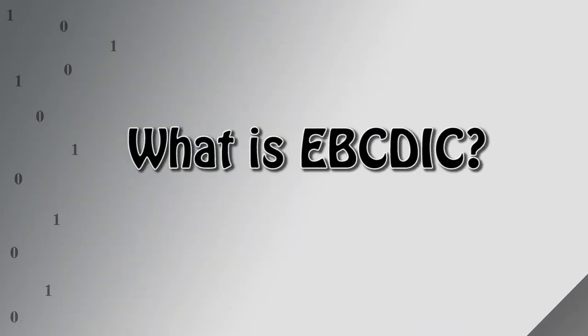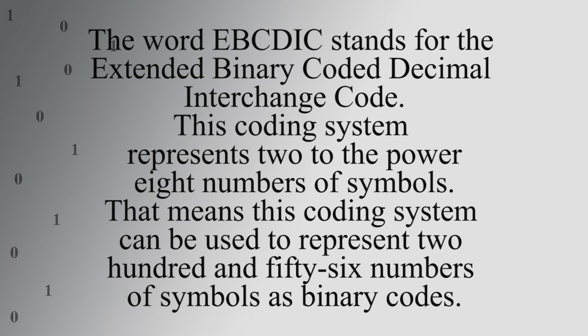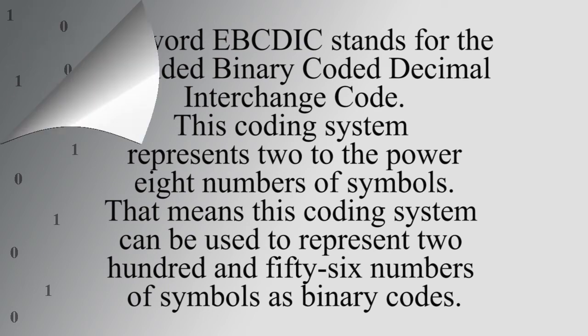What is EBCDIC? The word EBCDIC stands for Extended Binary Coded Decimal Interchange Code. This coding system represents 2 to the power of 8 numbers of symbols. That means this coding system can be used to represent 256 numbers of symbols as binary codes.